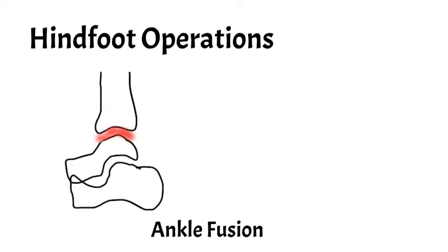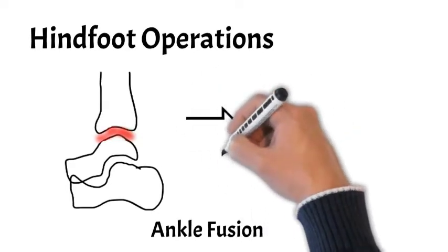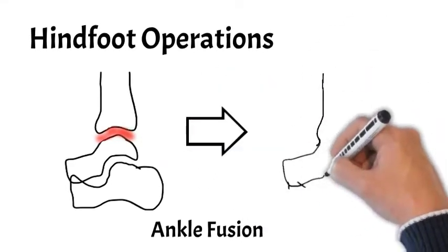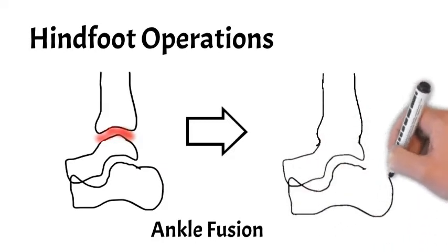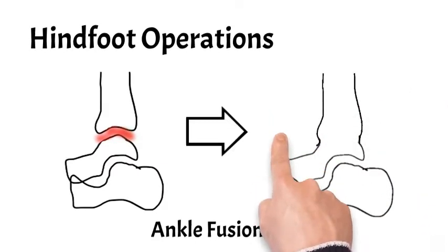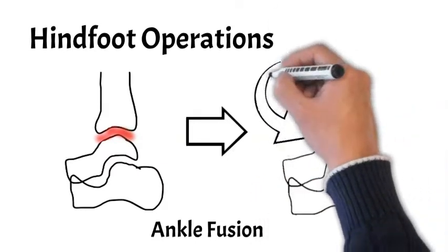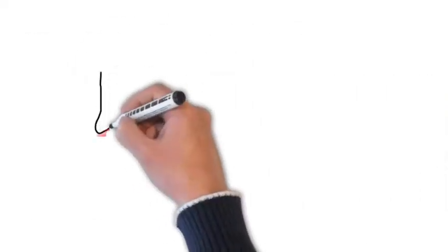An example of a hindfoot operation included in the study is an ankle fusion, which we've talked about many times before on this channel. The ankle fusion basically involves making the tibia and the talus into one bone, as marked with the arrow. That was one of the operations included in the study.